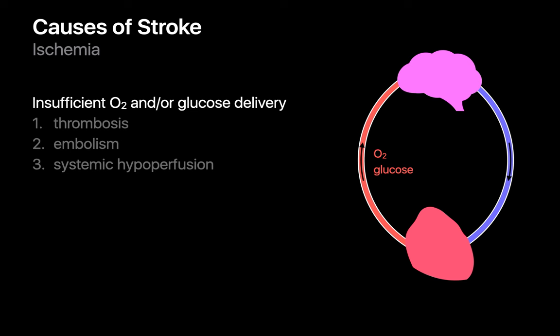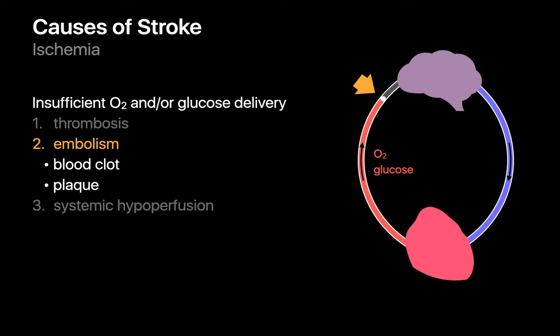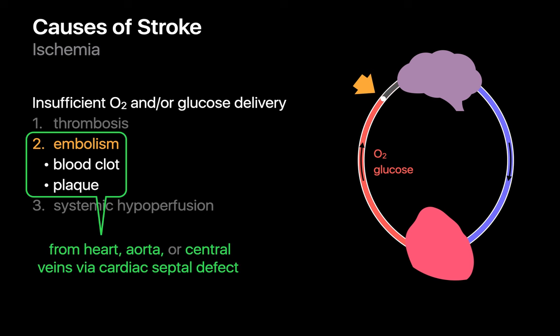Another reason why oxygen or glucose delivery to the brain may be interrupted is if an object floating in the bloodstream becomes stuck in an artery supplying the brain and obstructs downstream blood flow. This object could be a piece of blood clot, a piece of atherosclerotic plaque, or even a gas bubble. The source of the embolic object is usually the heart or aorta in most cases, but can sometimes even be a vein if a cardiac septal defect is present.